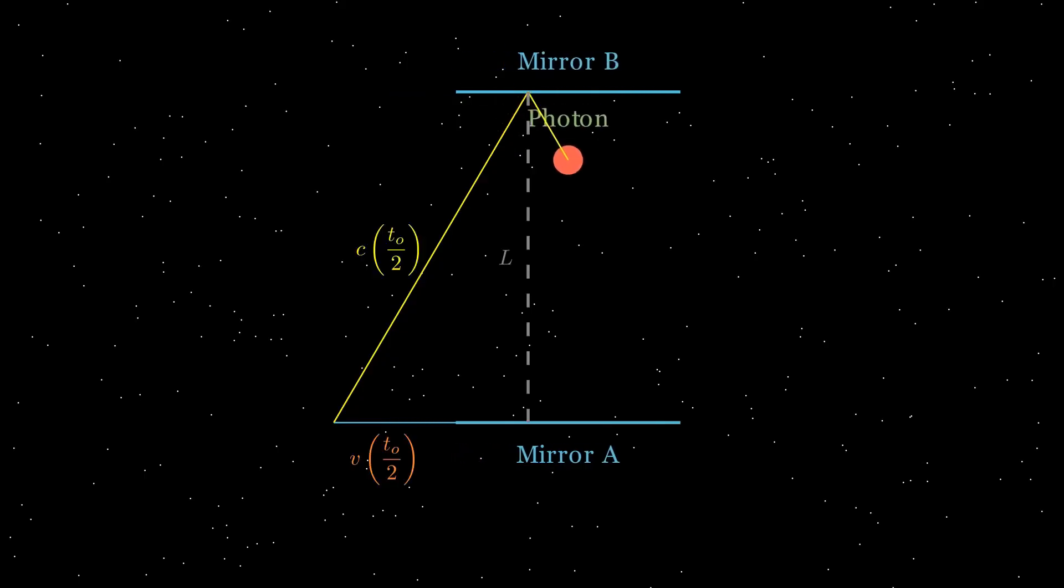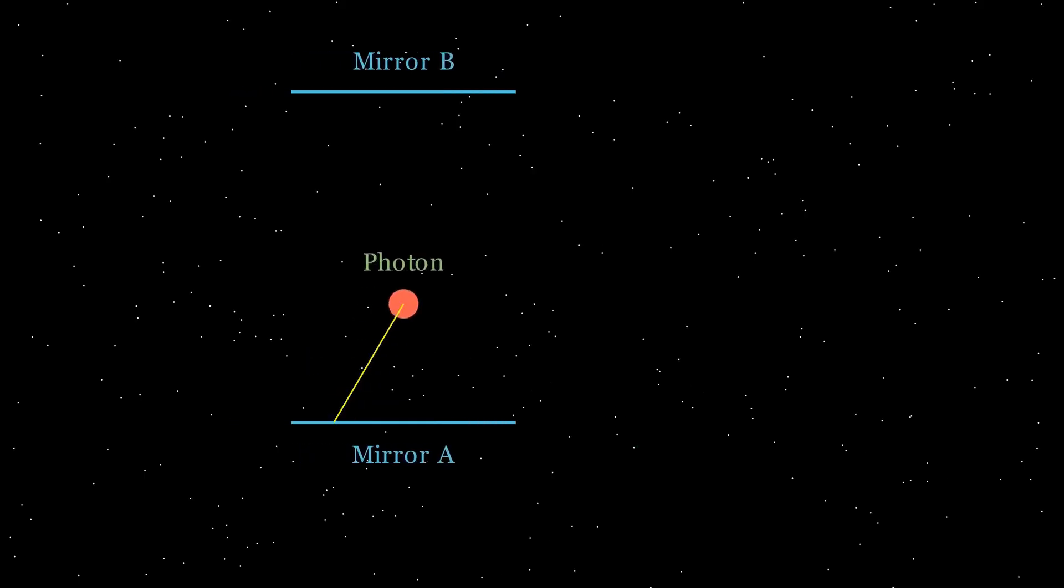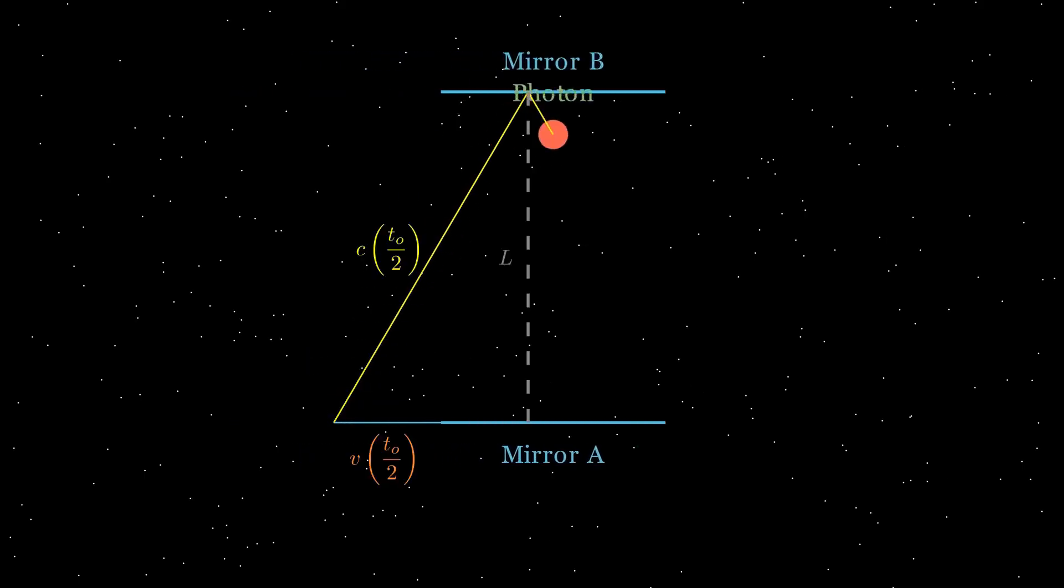The photon reflects off the top mirror and begins its journey back down. Just like the ascent, the descent is also diagonal, this time slanting downward and forward.